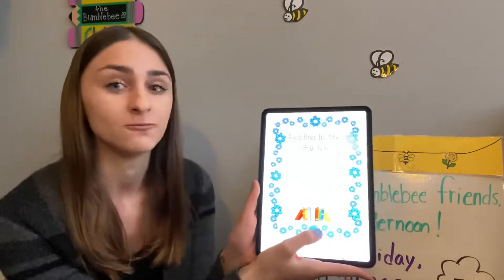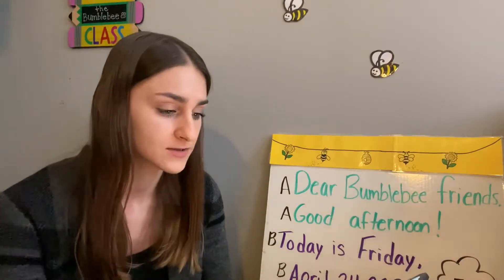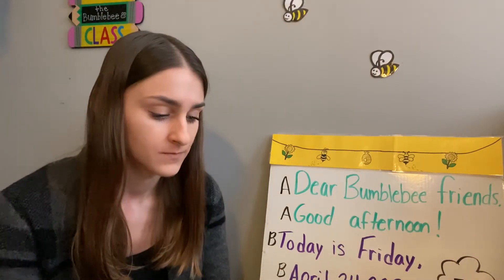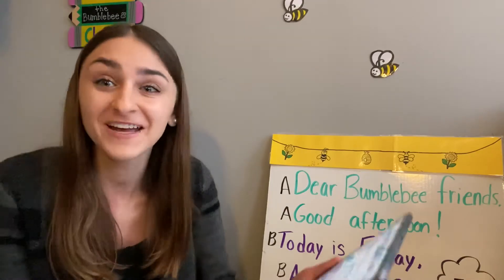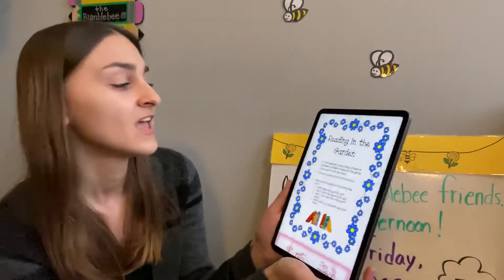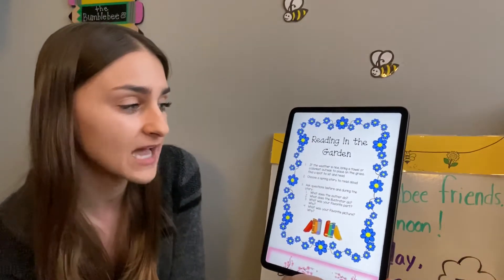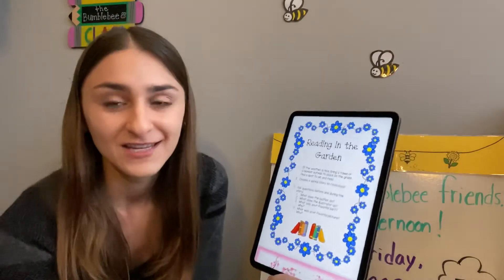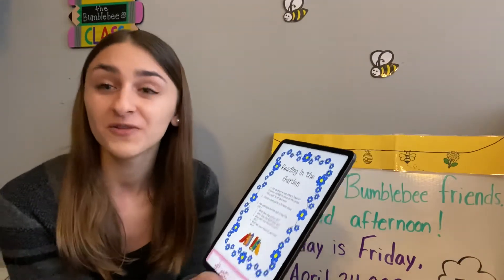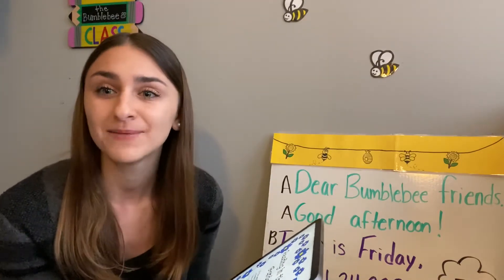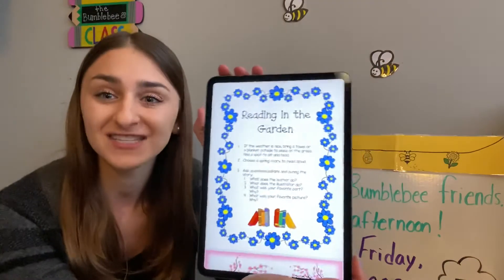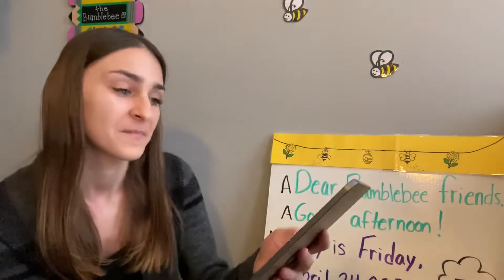Our first one is reading in the garden. What do you think reading in the garden is going to be? We're going to read! If the weather is nice, bring a towel or a blanket outside to place on the grass and find a spot to sit and read. By me today it's not so nice out, so I could either save this activity for the weekend when it is nice, or you could choose a cozy spot inside — maybe build a fort and read a spring story with your family members. We have some questions to ask as you read.